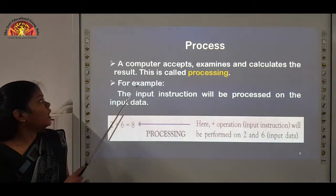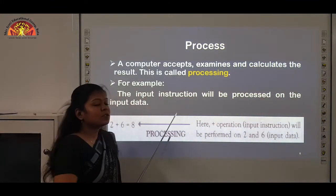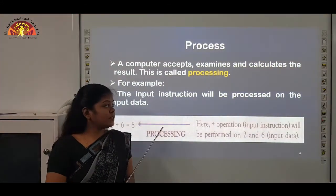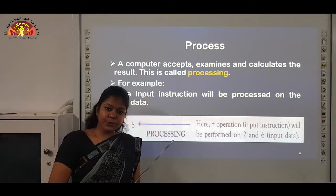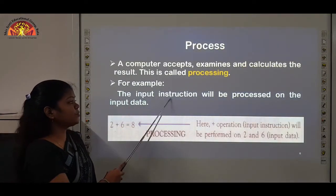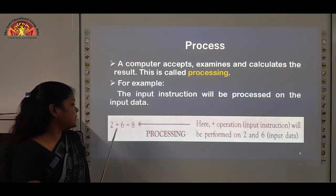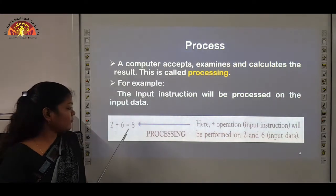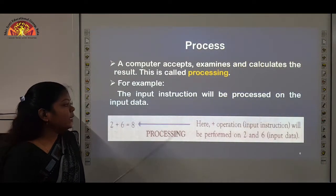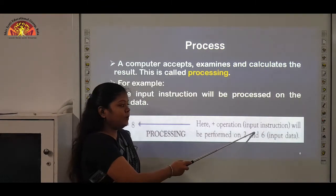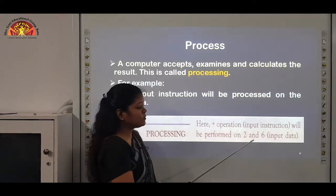The next step is process. A computer accepts, examines, and calculates the result — this is called processing. Processing is done by the processing device, that is the CPU, held by the system cabinet in the computer. For example, the input instruction will be processed on the input data — we have 2, 6, and the plus symbol. The computer processes this input data and gives it as an output. The plus operation, which is the input instruction, will be performed on 2 and 6, which are the input data.